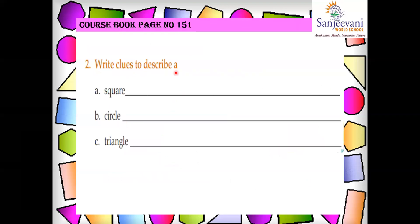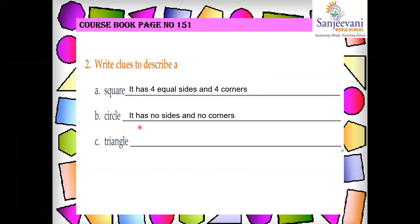Now, write clues to describe a square — clues means you will write the properties of the square. A square has four equal sides and four corners. A circle has no sides and no corners. A triangle has three sides and three corners. You can just pause the video and write down these clues in your course book.